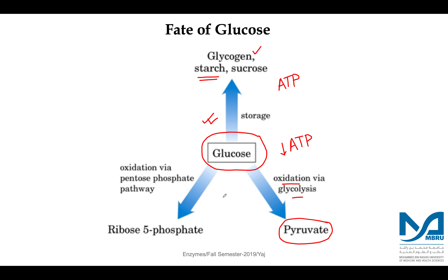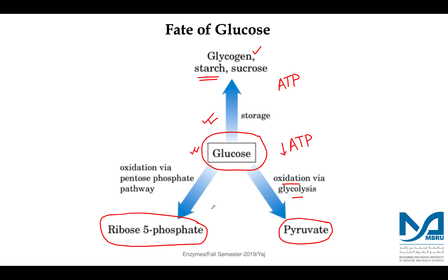In certain cases, we need to generate five-carbon sugars. Glucose acts as the precursor molecule and is converted to five-carbon sugars such as ribose-5-phosphate, which act as the backbone for ribonucleic acid or deoxyribonucleic acid. The pathway by which glucose is converted to these five-carbon sugars is known as the pentose-phosphate pathway, also known as the hexose-monophosphate pathway or the HMP shunt.